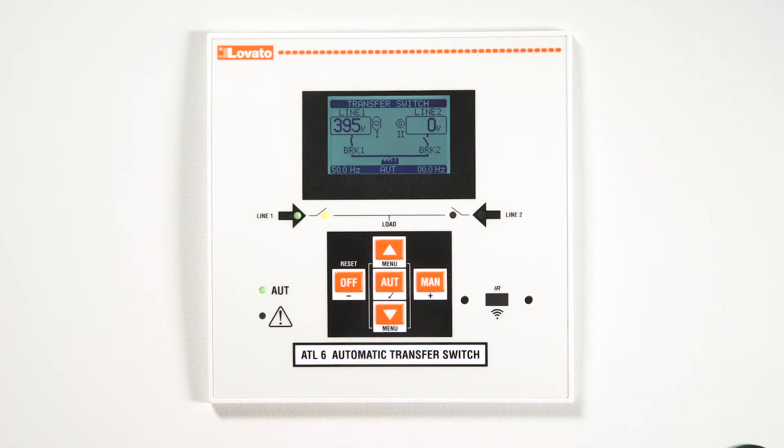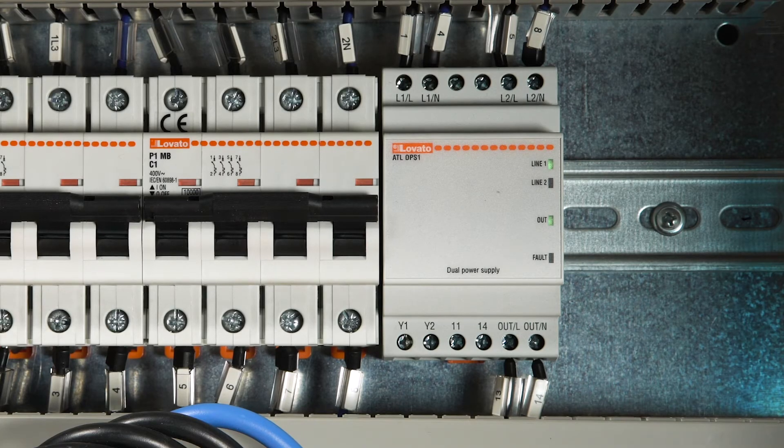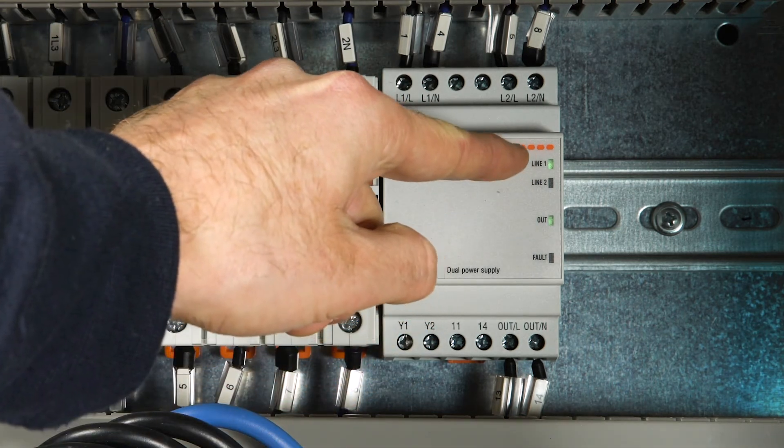When there is no mains fault, the ATL 610 switch keeps the line 1 LED on and the corresponding contactor closed. Consistently, ATL DPS1 has the line 1 LED lit.